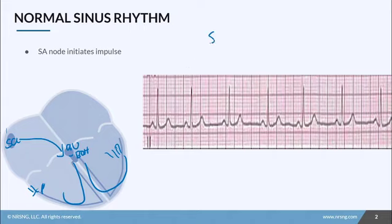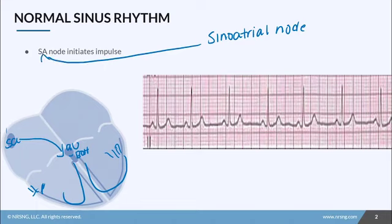This is the proper name for SA node, and it is actually where the term sinus rhythm comes from, because the electrical conduction is originated in the sinoatrial node.